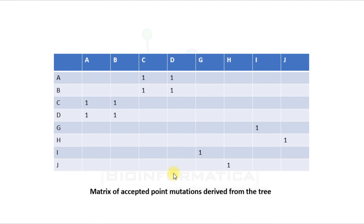In the matrix of accepted point mutations, we put 1 if the mutation is observed. For example, here we can see a mutation between A and C, so in this column we have put 1. It is assumed that the likelihood of amino acid A replacing C is the same as that of C replacing A. Hence, A replacing C is 1 and C replacing A is also 1. So 1 is entered in the box of CA as well as AC.